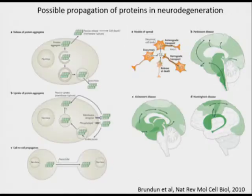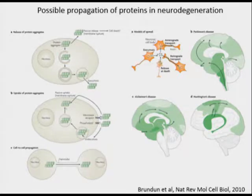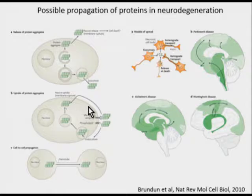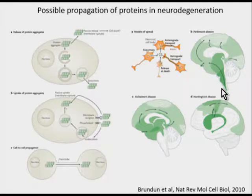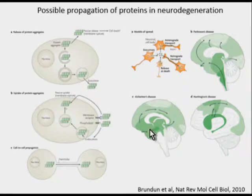There has been recent interest in how the staging of these protein disorders occurs—whether different areas have different susceptibilities, such that the dorsal motor nucleus of the vagus accumulates alpha-synuclein earlier than cortical sites in Lewy body disease, or whether there is an actual mechanism by which the protein, as it accumulates, spills out and is taken up by adjacent cells, thereby spreading—in Parkinson's disease from the dorsal motor nucleus of the vagus up in a monosynaptic fashion to cortical sites, or in Huntington's disease from the caudate to the cortex, and in Alzheimer's disease through the limbic system.